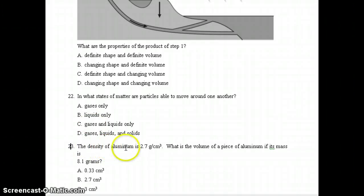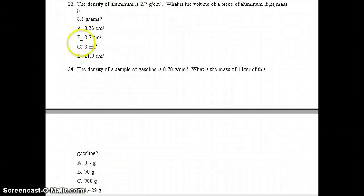Number 23, the density of aluminum is 2.7 grams per cubic centimeter. What is the volume of a piece of aluminum if its mass is 8.1 grams? The correct answer, if you find the volume, you take the mass divided by the density. And if you take 8.1 divided by 2.7, you will get C, 3 cubic centimeters. Number 24, the density of a sample of gasoline is 0.7 or 70 hundredths grams per cubic centimeter. What is the mass of one liter of this gasoline? To find the mass, you will take the density times the volume. So 0.70 times 1, the correct answer would be letter A, 0.7 grams.